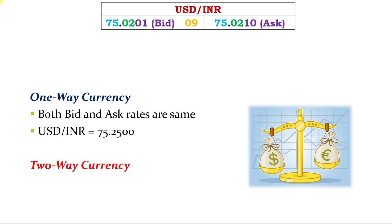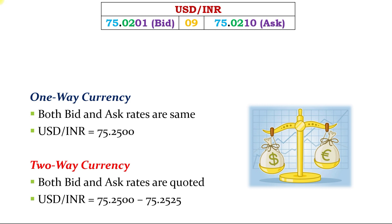The next one is the two-way currency quote. In this quote, both bid and ask rates are quoted separately. For example, the currency quote between US dollar and INR is 75.2500 and 75.2525. Here, the bid rate is 75.2500 and the ask rate is 75.2525. The difference between these two rates is 0.0025, that is 25 pips, which is also called the spread.